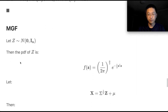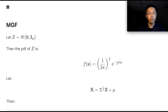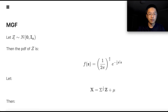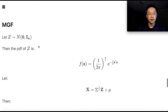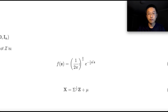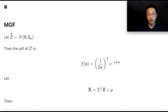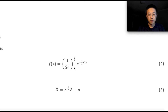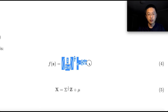Now let's find the formula for the probability density function of a multivariate normal random variable. Suppose z is a vector of random variables where each element of the vector is an independent one-dimensional standard normal random variable. Because they are independent, the joint pdf of z is just the multiplication of each individual pdf of the elements of z — that is, the product of each standard normal density function.